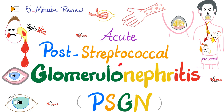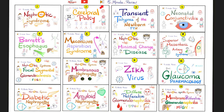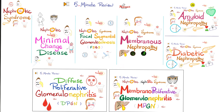In previous videos, we discussed the nephrotic syndromes, such as minimal change disease, focal segmental glomerulosclerosis, membranous nephropathy, diabetic nephropathy, and amyloidosis. Then we talked about the nephritic-nephrotic syndromes, such as diffuse proliferative glomerulonephritis and membranoproliferative glomerulonephritis. Please watch these videos in order, especially the nephrology ones.